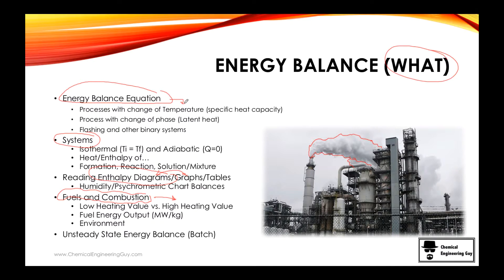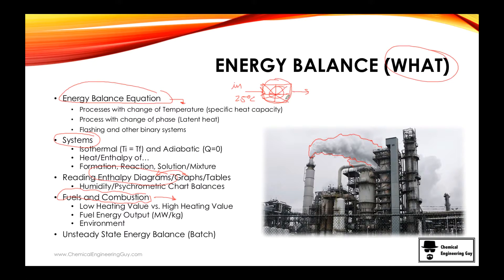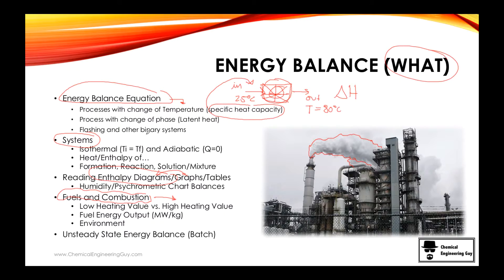The first thing we analyze in the energy equation is heating. Here we have a black box — we don't know how a heater works, but we know something goes in at maybe 25°C and the outlet is maybe 80°C. So the first thing we ask is: how do we change temperature? What is specific heat? We will eventually understand that there is a change in enthalpy, typically at constant pressure.